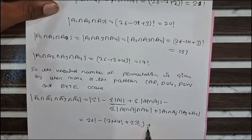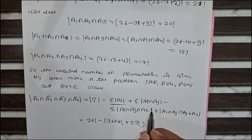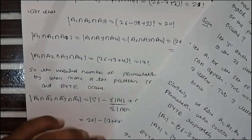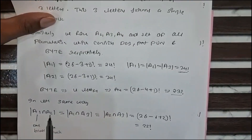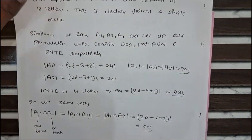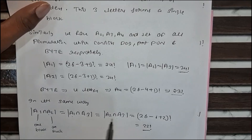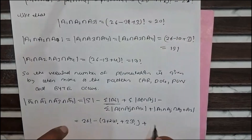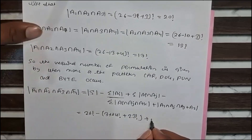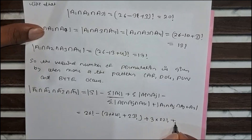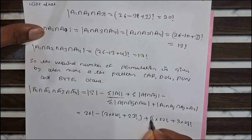For summation of |Ai ∩ Aj|: A1 ∩ A2, A1 ∩ A3, and A2 ∩ A3 each give 22 factorial — three such pairs — so 3 × 22 factorial. Plus the intersections involving A4 (A1 ∩ A4, A2 ∩ A4, A3 ∩ A4) each give 21 factorial, so 3 × 21 factorial.